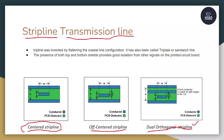Centered strip lines are the most used in the market. In this cross-sectional view of a strip line trace, the blue line shows the trace and the green part is the PCB dielectric material. There is a presence of both top and bottom shields to provide good isolation, which is why strip line traces are majorly used for high-speed board designs.